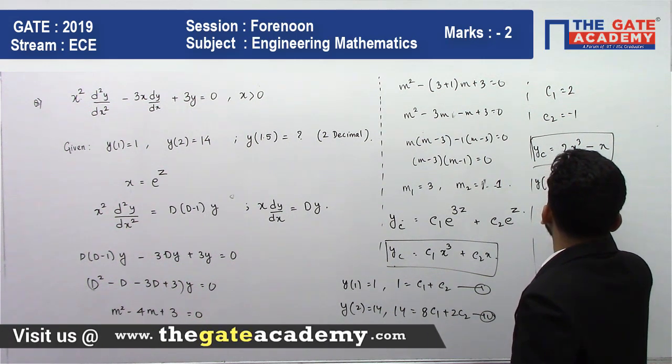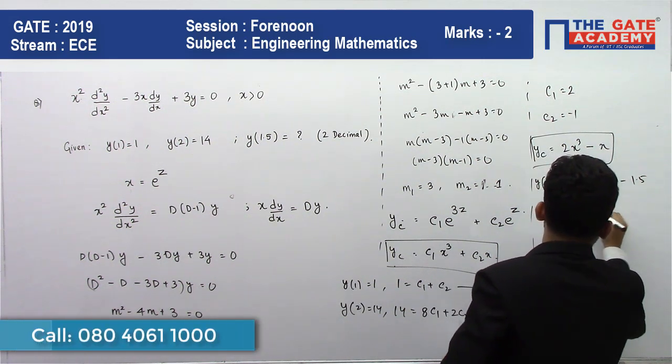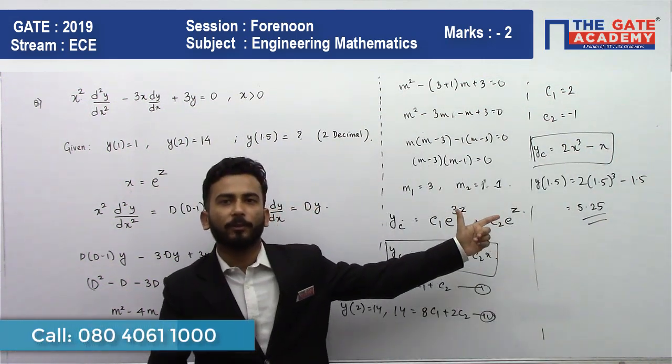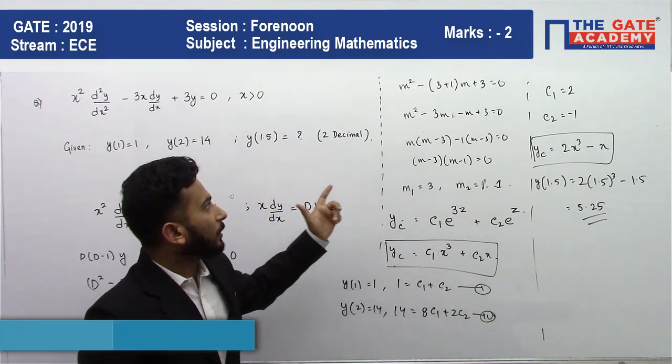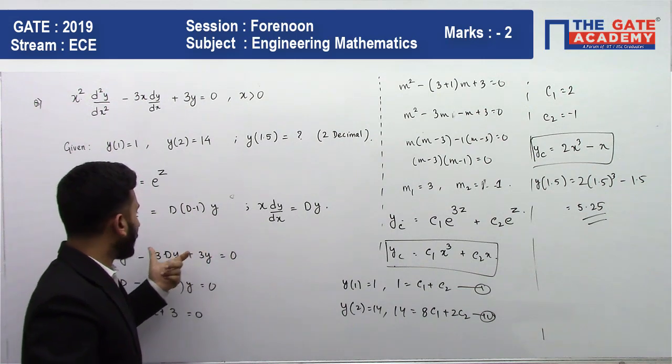You need to find the value of y(1.5), so y(1.5) = 2(1.5)³ - 1.5, and the answer that you will be getting is 5.25.